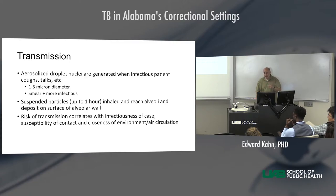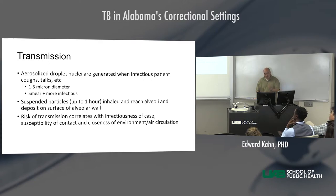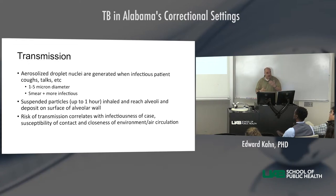There can be viable TB bacteria within a person, contained within the macrophages, and this can be present for the whole life of that person and just sit like that. But if that person 20 years later goes on a TNF inhibitor, gets an organ transplant requiring immunosuppression, or something like that, that can wake up — those bacilli can start multiplying and cause active disease.